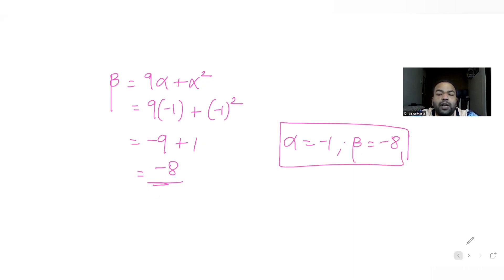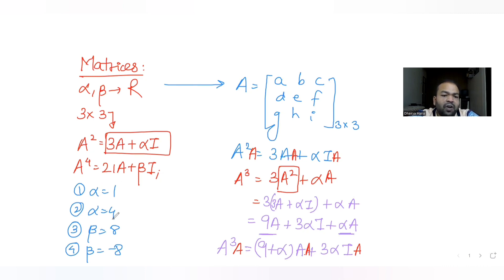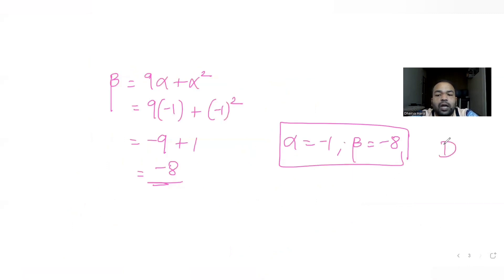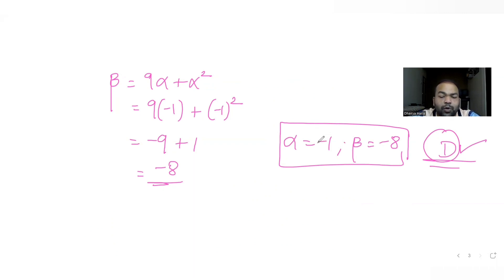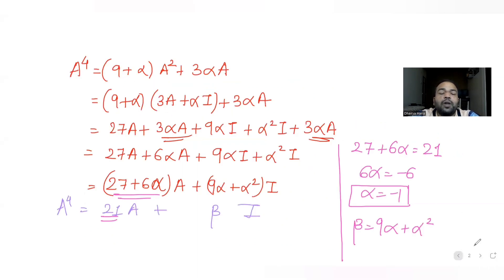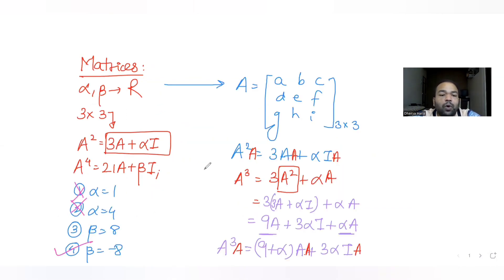Looking at the options, alpha is −1, so alpha cannot be 1 or 4 — those two answers do not match. Beta is −8, which is the correct value. So the correct option is D. I hope you've understood how to solve these types of questions using post-multiplication by matrix A. I'll meet you tomorrow with the next question. Till then, like, share, and subscribe. Also share with friends preparing for JEE. Thank you.